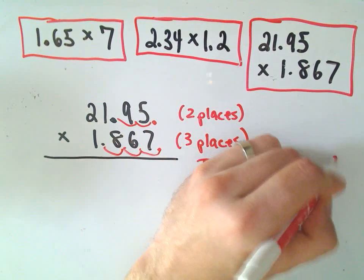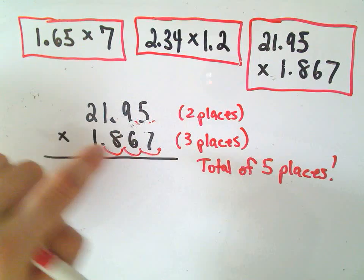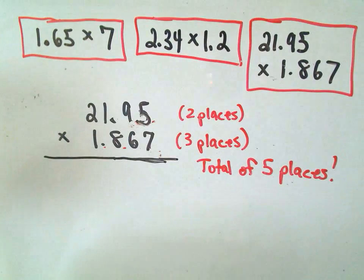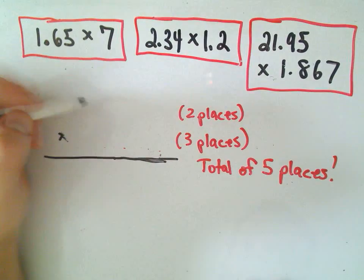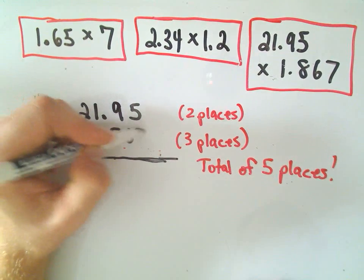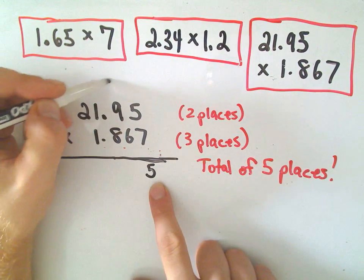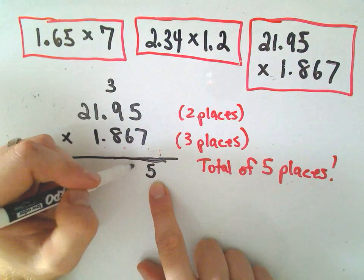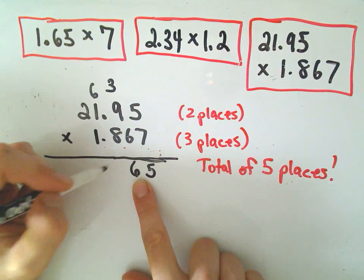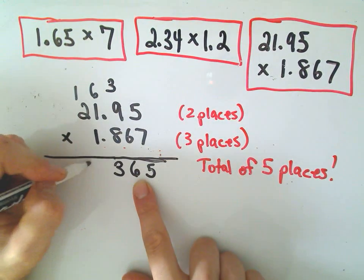Okay, so I have to remember this and keep this in mind. But again, other than that, it's just going to be a matter of just multiplying, pretending they're whole numbers, and just putting the decimal place where it needs to be. All right, so let's see if we can do this. So 21.95 times 1.867. So 7 times 5 is 35, so we'll drop down the 5, carry the 3. 7 times 9 is 63, plus 3 is 66, so we'll drop down the 6, carry a 6. 7 times 1 is 7, plus 6 is 13, so we'll drop down the 3, carry the 1. 7 times 2 is 14, add 1, that'll give us 15.